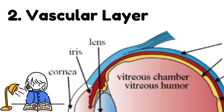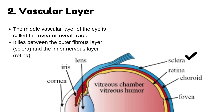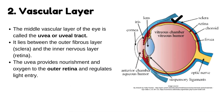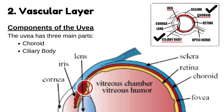The next layer after the fibrous layer is the vascular layer. The middle vascular layer of the eye is called the uvea, or uveal tract. It lies between the outer fibrous layer (sclera) and the inner nervous layer (retina). The uvea provides nourishment and oxygen to the outer retina and regulates light entry. The uvea has three main parts: the choroid, the ciliary body, and the iris.